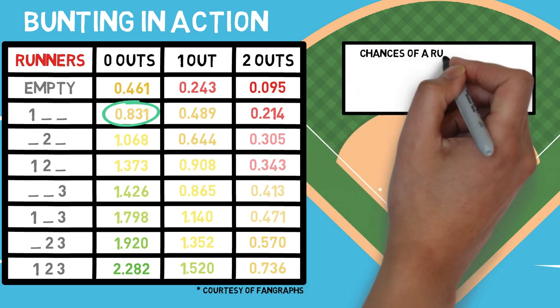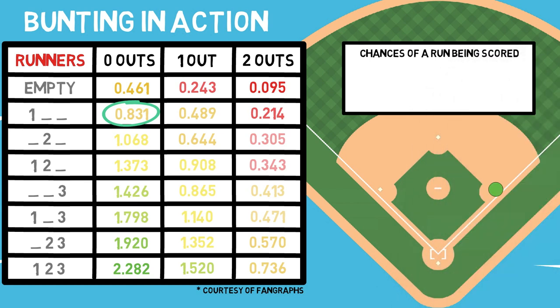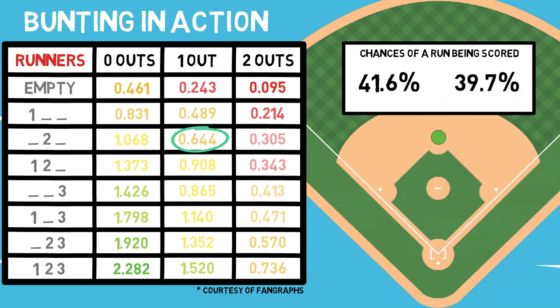I will then give you the chance that a single run will be scored based on each of these positions. For this specific scenario, you will see that there is a 41.6% chance that a single run will be scored when you have a runner on first base with no outs. Now if the next batter were to come up and lay down a perfect sacrifice bunt, advancing our original base runner but getting himself out in the process, your situation has changed. Instead of scoring .831 runs with a runner on first and no outs, we've actually put ourselves into a worse situation: a runner on second base with one out, reading as .644 runs. Our odds of scoring a run in general have also dropped to 39.7%, which in both cases is worse than before.